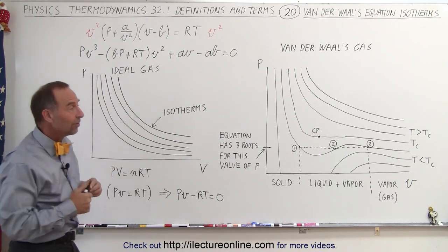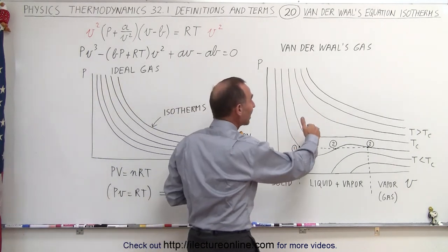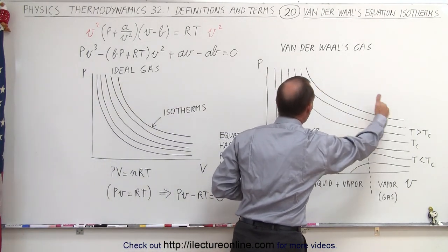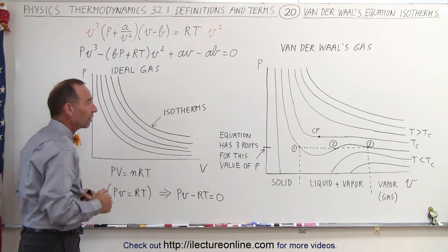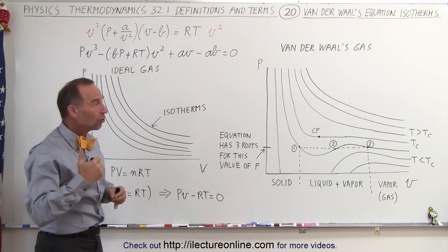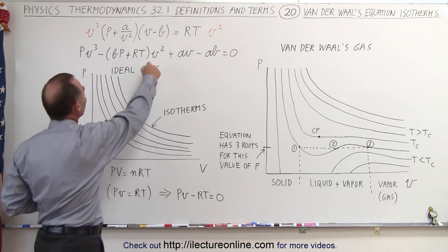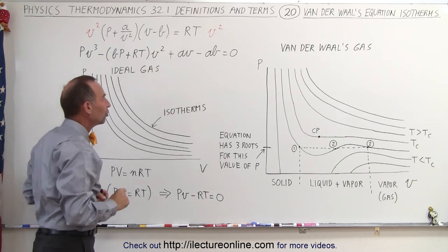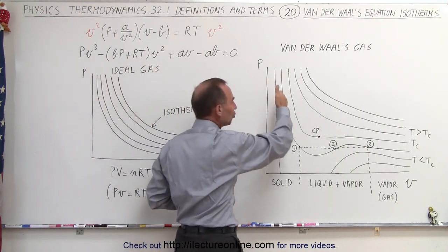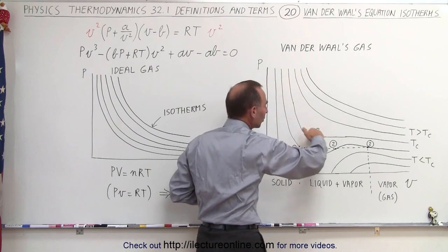But what we can say is that for very high temperatures, the pv diagram for the Van der Waals equation looks very similar to the pv equation of the ideal gas. When the temperature begins to drop, then we can see that this term begins to change in value times v squared relative to the pv cubed term, and we begin to see changes in what the pv diagram looks like.